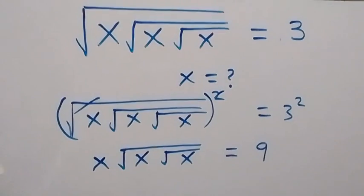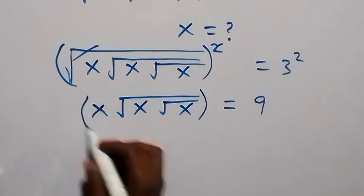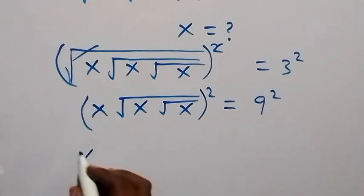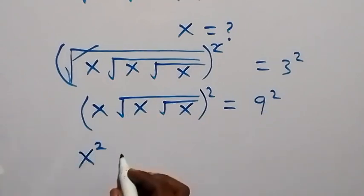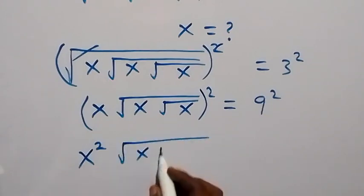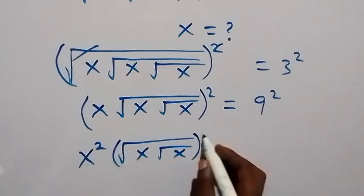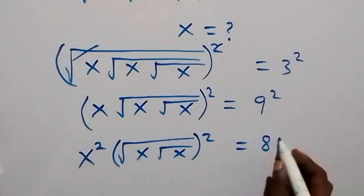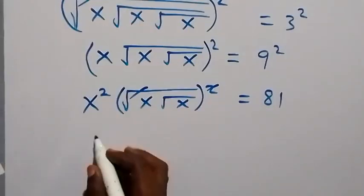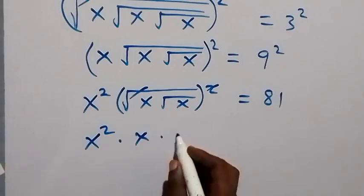In the next step we square both sides of this equation again. This square affects x giving x squared, and it affects the remaining square root of x times root x. On the right side 9 squared gives us 81. Cancelling the square root, we now have x squared times x times root x equals 81.